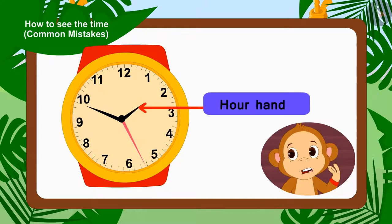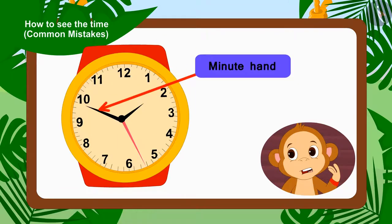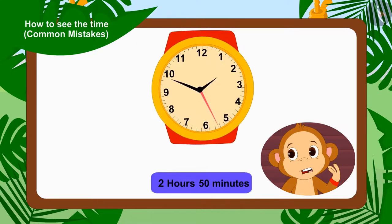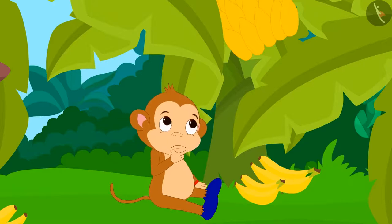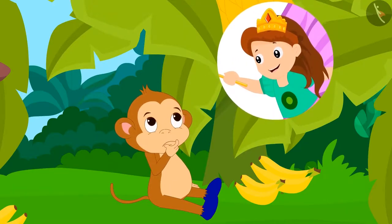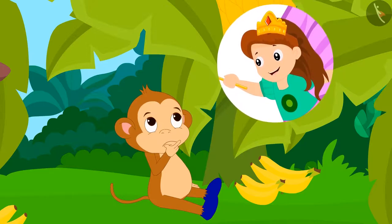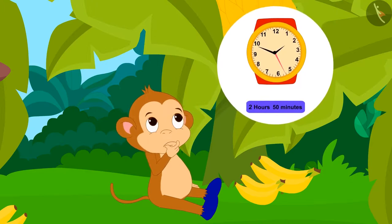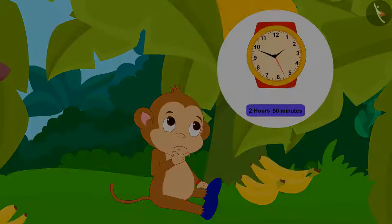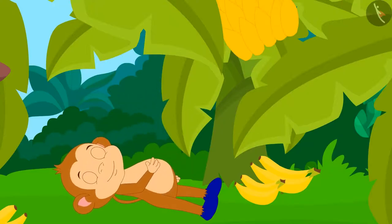Babban thought that the hour needle between 1 and 2 is very close to 2. Hence, 2 hours have passed and the minute needle is on number 10, or 10 times 5, 50 minutes have passed. So the time is now 2 hours and 50 minutes. Babban thought that the angel has allowed him to stay there only, because it's already 2 hours and 50 minutes and he was still there. After thinking this, Babban fell asleep peacefully.